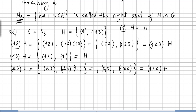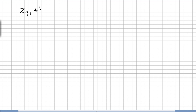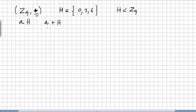Let us try another example: pick Z9 under addition modulo 9. We pick a subgroup H = {0, 3, 6}. This is easily a subgroup of Z9. Here, instead of writing aH we write a plus H, because the operation is addition modulo 9.